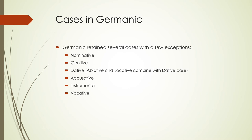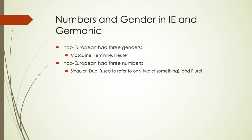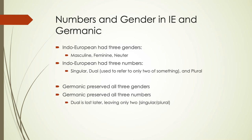In terms of number and gender going from Indo-European to Germanic: Indo-European had three genders — masculine, feminine, and neuter — and three numbers: singular, dual (referring to exactly two of something), and plural. Germanic preserved all three genders and all three numbers at first. The dual is lost later, leaving only a singular-plural distinction, so by the time we get to modern English we only have that two-way distinction.